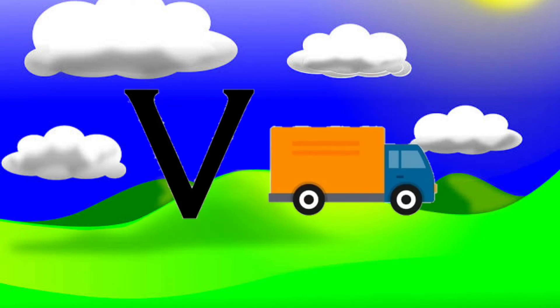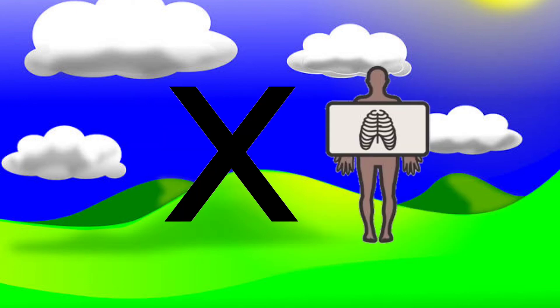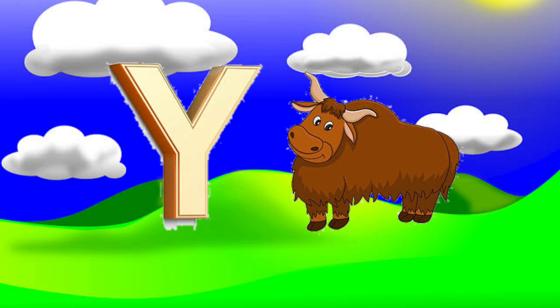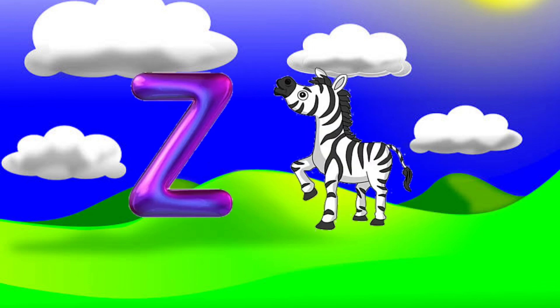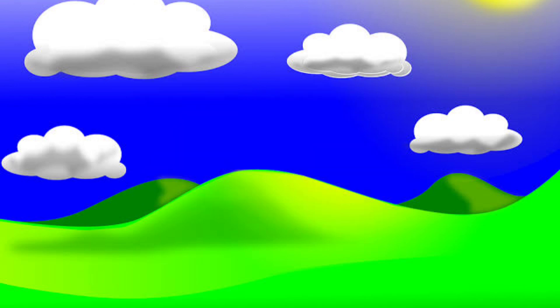U for Umbrella, V for Van, W for Wall, X for X-Ray, Y for Rock, Z for Chebra.